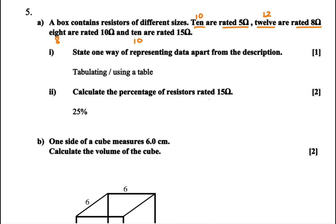Then calculate the percentage of the resistors that are rated 15 ohms. So the percentage of the resistors that rated 15 ohms is 25%. So this is how we got it. First of all, to do it, I'm going to tell you the total number of resistors.